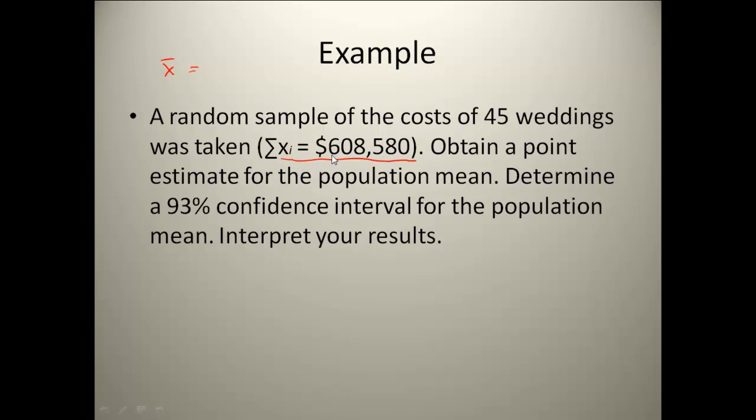Well, the reason I gave you the sum of these numbers is because in order to find x bar, you have to add them all up and divide by how many you have. So we need to take that 608,580, we need to divide that by 45 to get our mean. And when you do that, the mean is 13,524.